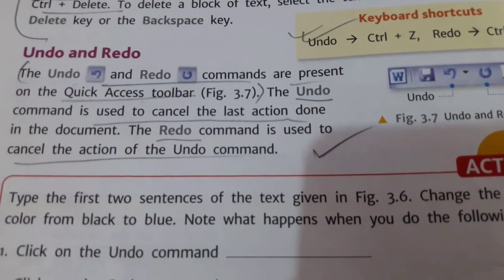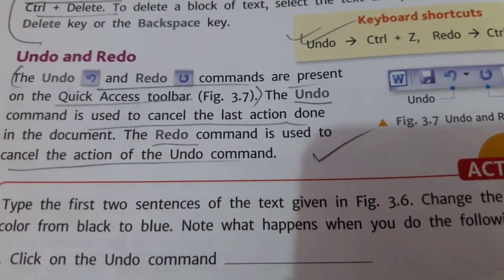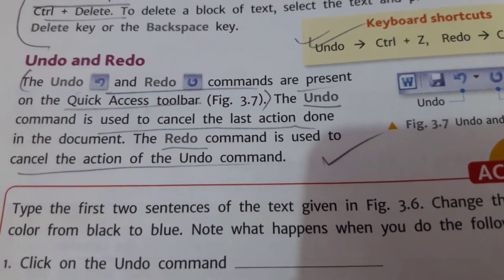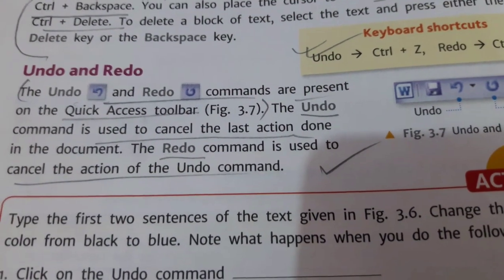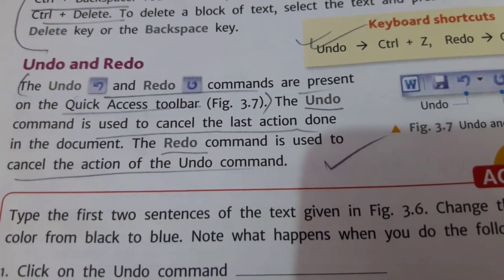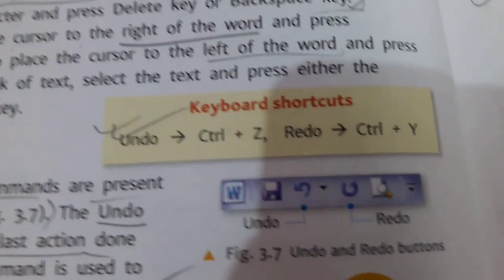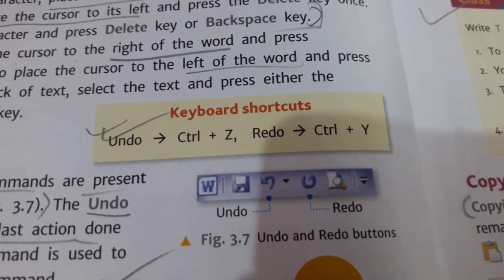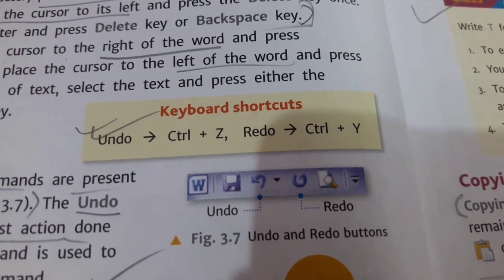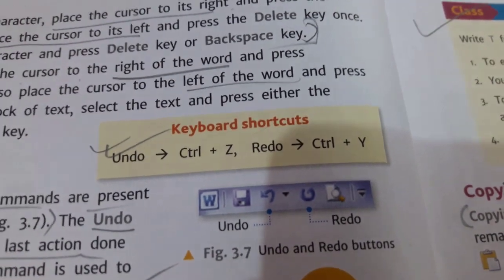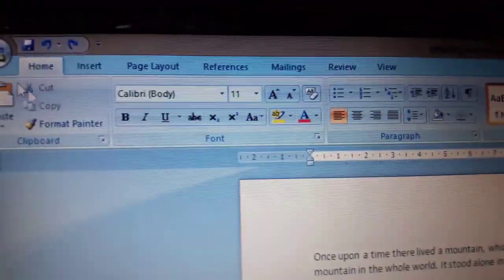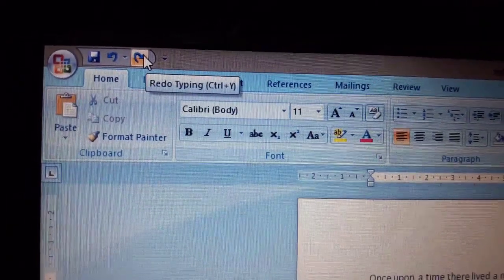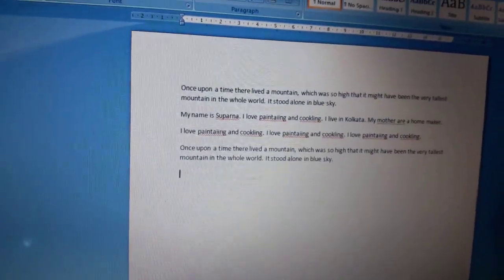The Undo and Redo commands are present on the Quick Access Toolbar. The Undo command is used to cancel the last action done in the document, and the Redo command is used to cancel the action of the Undo command. The shortcut key for Undo is Ctrl+Z and for Redo the shortcut key is Ctrl+Y.